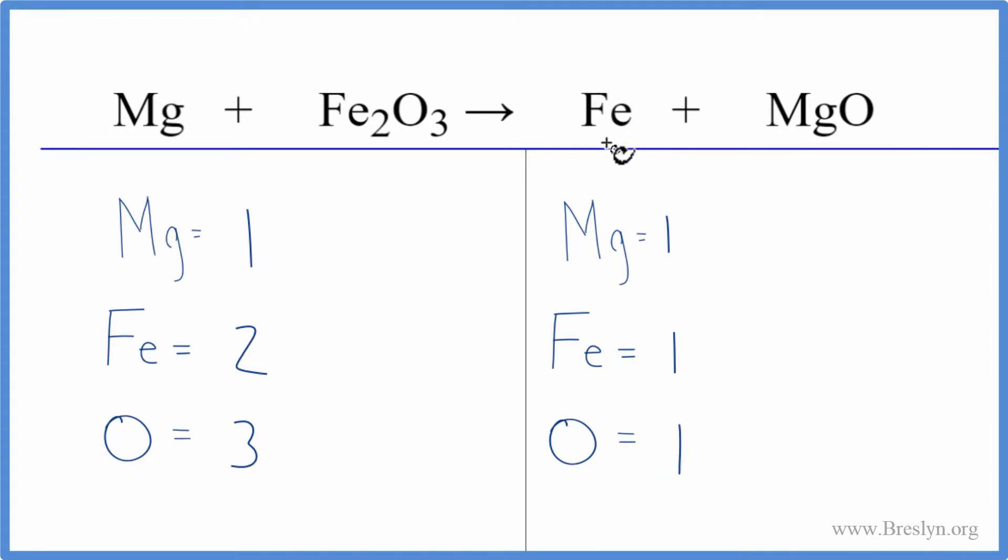Since iron is all by itself here, let's leave that till last. Why don't we fix the oxygens? We could put a three in front of the MgO, the magnesium oxide. Then we'd have one times three. That would give us three magnesiums, but for the oxygen, one times three. That gives us three oxygen atoms. We've balanced the oxygens.